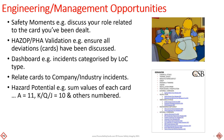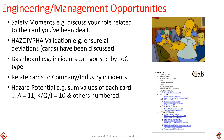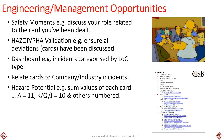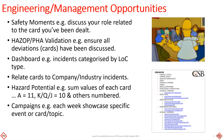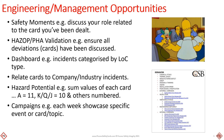Hazard potential — for example, add up the values of each card: ace is 11, king, queen and jack are 10, and other cards are numbered. Campaigns — for example, each week showcase specific events or card topics.